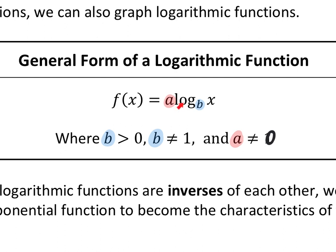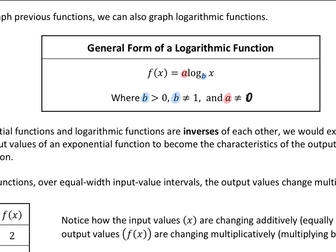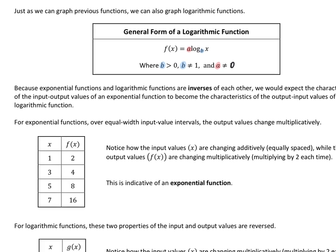Logarithms are inverses of exponentials that have the same base, potentially multiplied by some number. Since we've learned about inverses previously, we can make a connection. We would expect the characteristics of the input-output values of an exponential function — x comma y — to become the characteristics of the output-input values of a logarithmic function — y comma x. What have we done with those two coordinate points? Swap them. That's what we did when we learned about inverses: we switched the x's and y's.